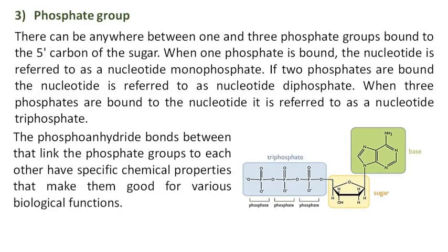Phosphate group: There can be anywhere between one and three phosphate groups bound to the five carbon of the sugar. When one phosphate is bound, the nucleotide is referred to as a nucleotide monophosphate. If two phosphates are bound, the nucleotide is referred to as nucleotide diphosphate. When three phosphates are bound, the nucleotide is referred to as a nucleotide triphosphate. The phosphoanhydride bonds that link the phosphate groups to each other have specific chemical properties that make them good for various biological functions.